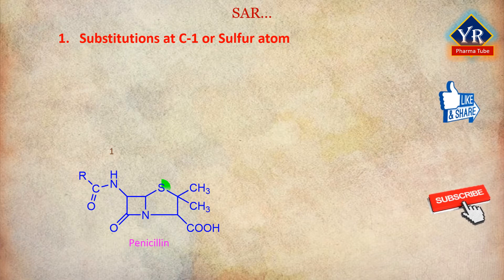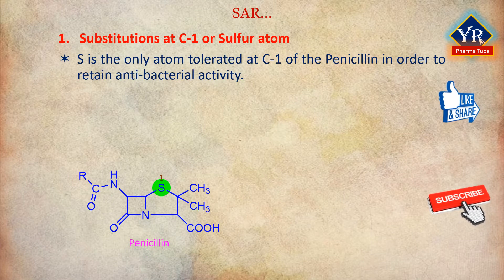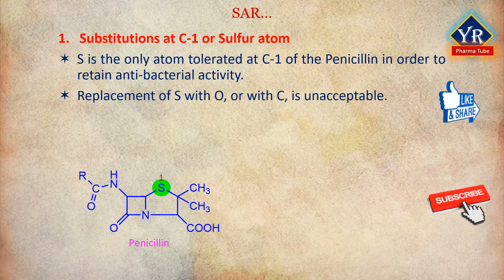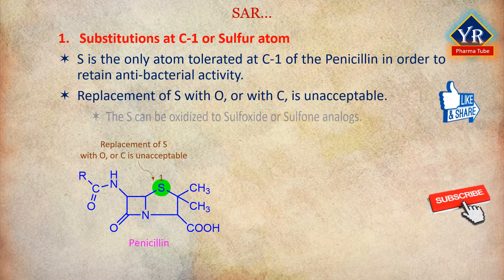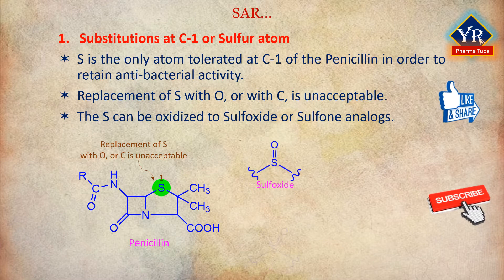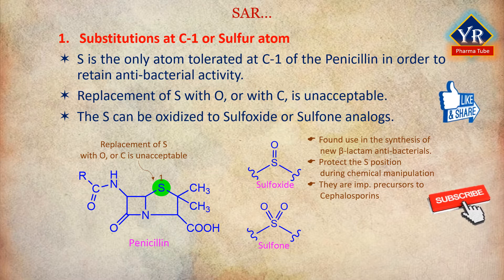Number 1: Substitutions at C1 or at the sulfur atom. Sulfur is the only atom tolerated at position 1 of the penicillins in order to retain appreciable antibacterial activity. Unlike some other members of the beta-lactam family, replacement of sulfur with oxygen or with carbon is unacceptable in terms of antibacterial activity. The sulfur atom can be oxidized to the corresponding sulfoxide or sulfone analogues, but derivatives of this type do not rival the antibacterial properties of naturally occurring penicillins. However, penicillin sulfoxides have found use in the synthesis of new beta-lactam antibacterials and can serve as a means of protecting the sulfur position during chemical manipulations. Furthermore, penicillin sulfoxides are important precursors to cephalosporins via the Morin rearrangement.